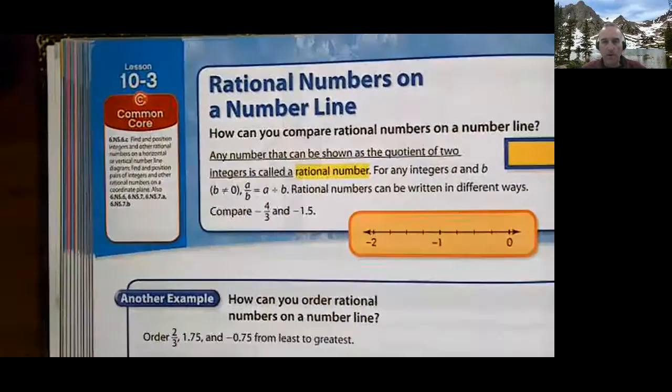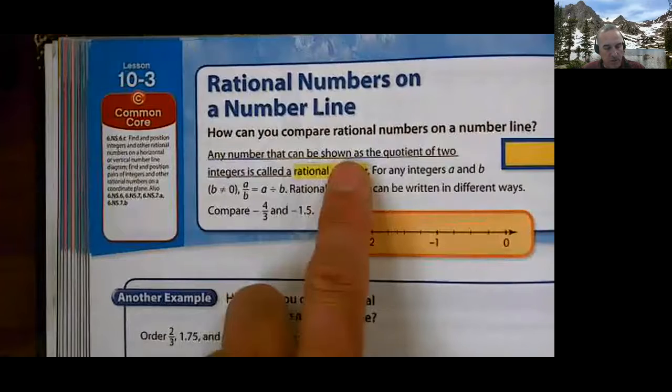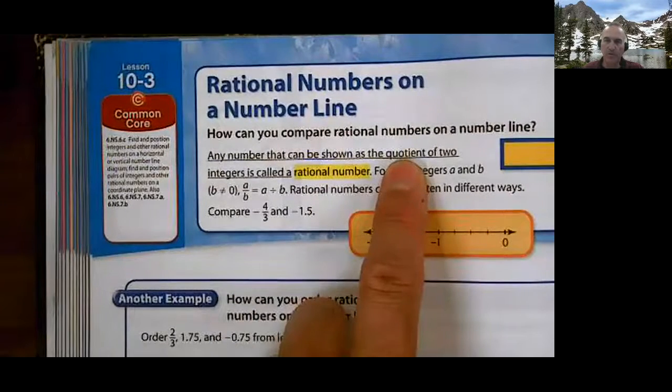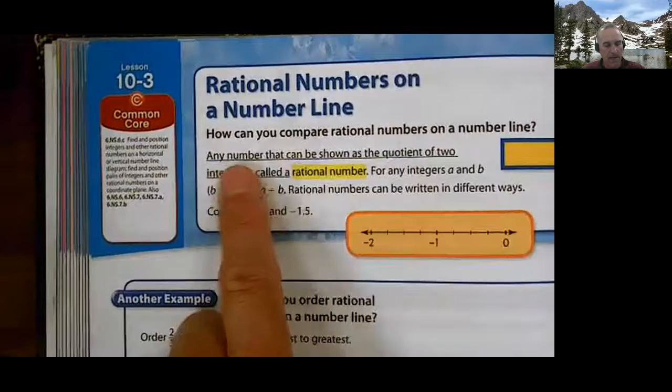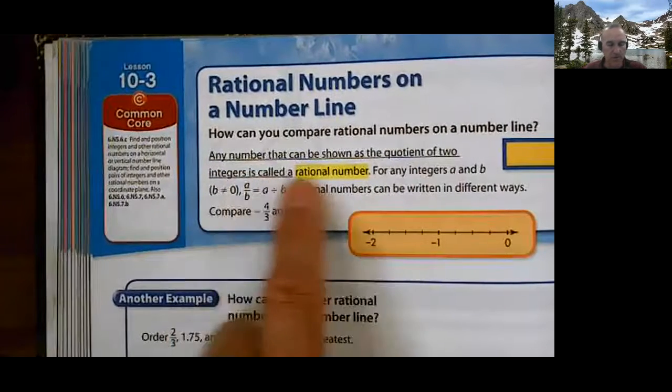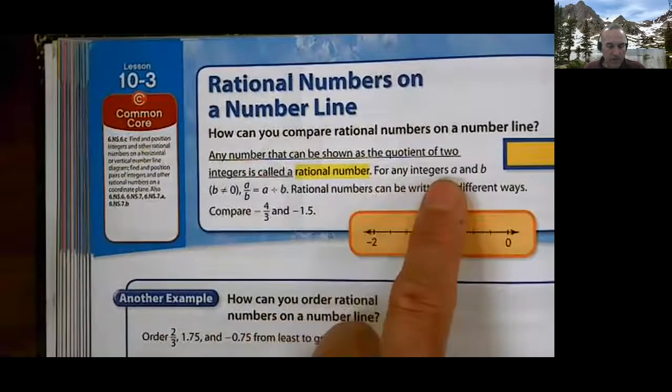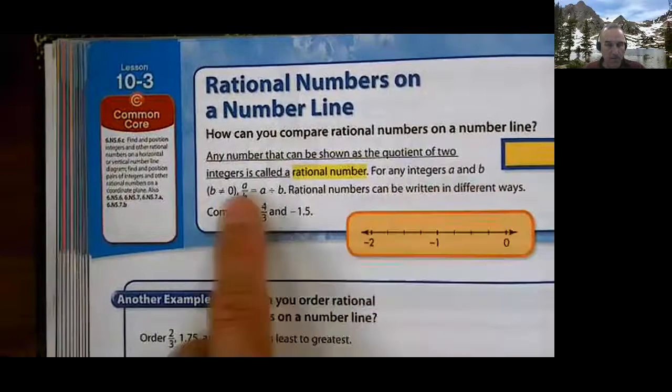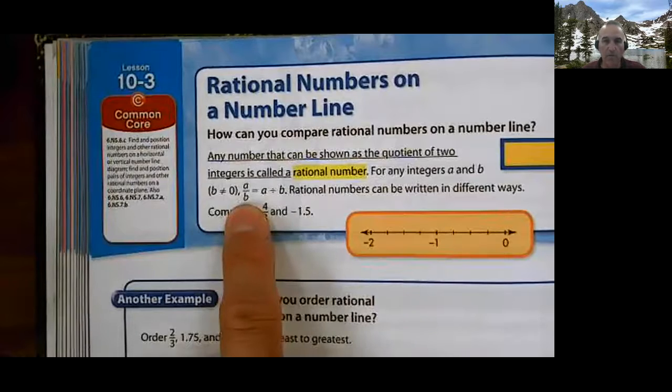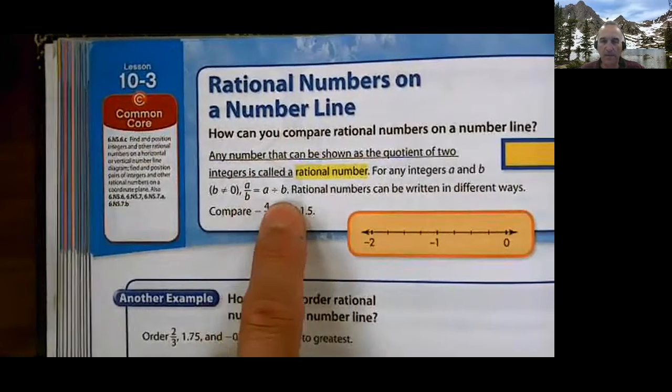What are rational numbers? Any number that can be shown as the quotient, the answer to a division problem, any number that can be shown as the quotient of two integers is called a rational number. For any integers A and B, where B does not equal zero, in this format, the A over B format, which equals A divided by B.